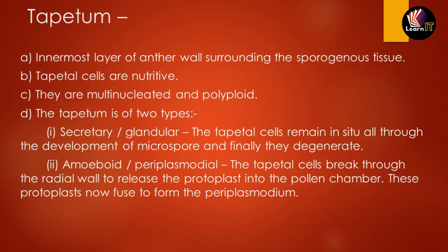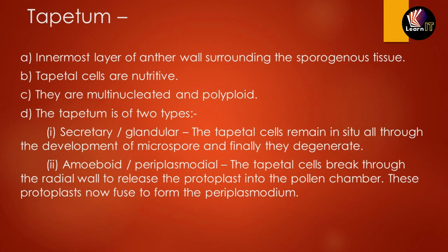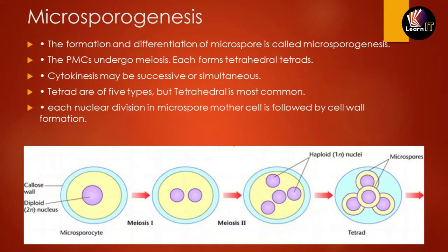Tapetum has multi-nucleated cells of different types and sizes. It is divided into two types: the first is the secretory or glandular type, in which tapetum cells remain in situ throughout microspore development and finally degenerate. The second is the amoeboid or periplasmodial type, in which the tapetum cells break down their radial walls, release their protoplasm into the pollen chamber, and these protoplasms fuse to form the periplasmodium.